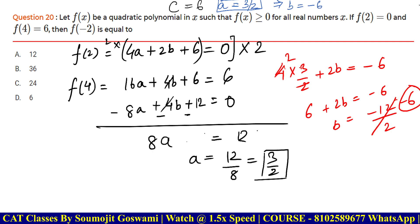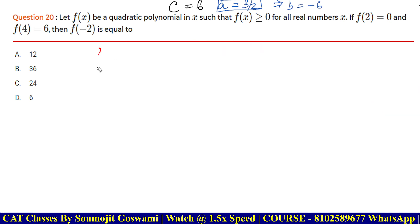Now, yeah, that's it. I have to calculate for f of minus 2, which is ax square. So, 3 by 2 into 4 plus bx, which is minus 6. This x, I already know, is minus 2 plus c, that is 6. Ax square plus bx plus c. Comes out to be 6 plus 12 plus 6. 6 plus 6 is 12 plus 12, that is 24.